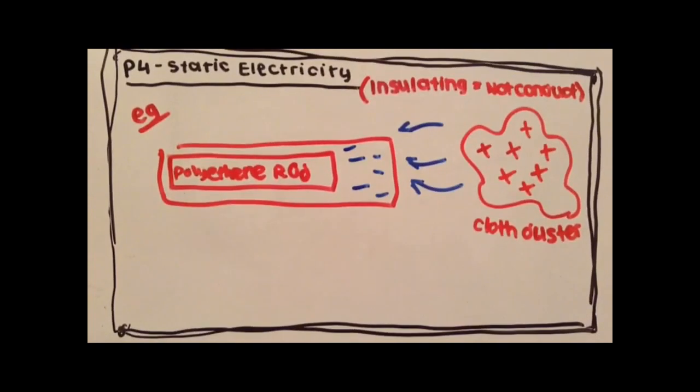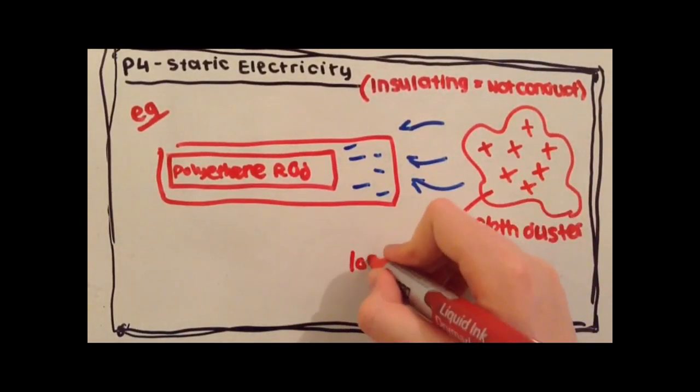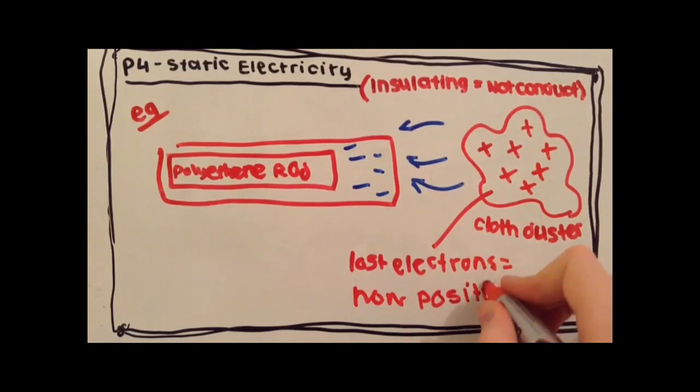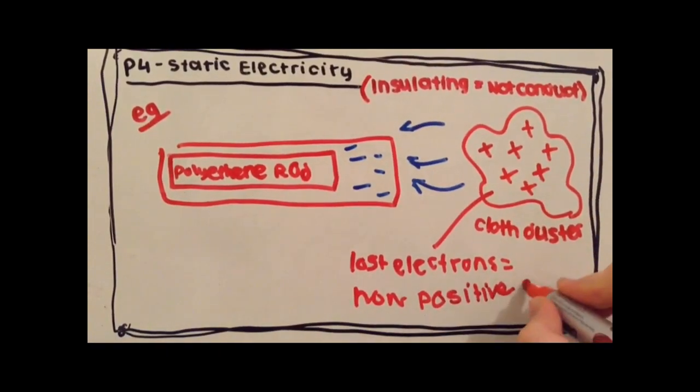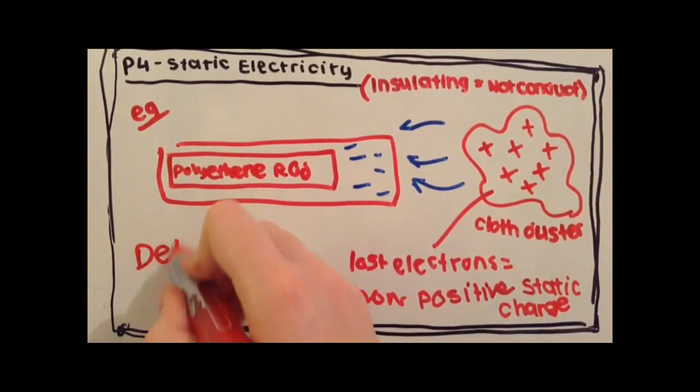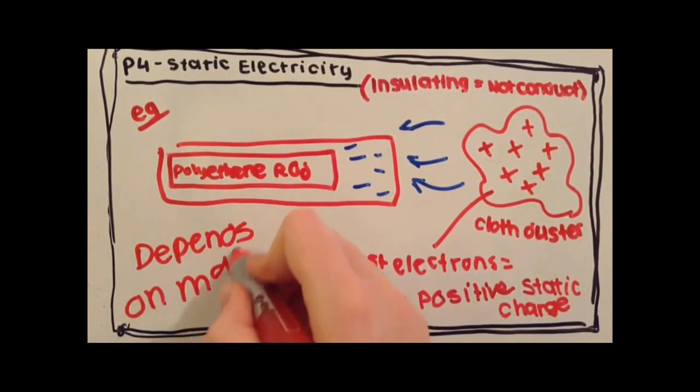In this case, the electrons have moved from the duster to the rod, leaving the duster with a positive static charge. Which way the electrons are transferred depends on the two materials involved.